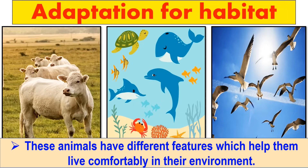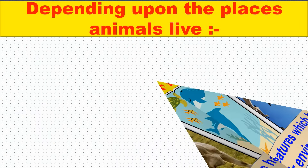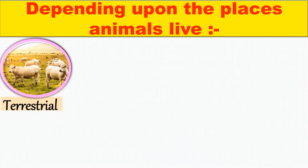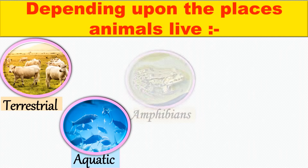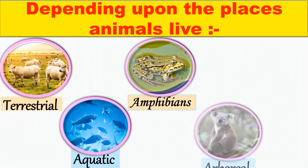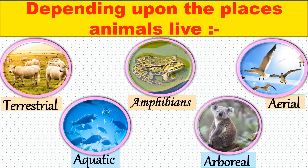These animals have different features which help them live comfortably in their environment. Depending on the place they live, animals can be classified into terrestrial animals, aquatic animals, amphibians, arboreal animals, and aerial animals.